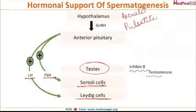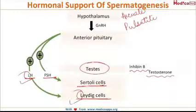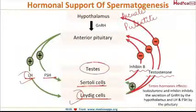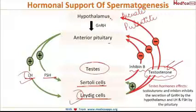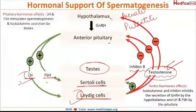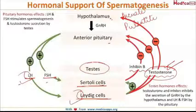FSH acts on Sertoli cells releasing inhibin B, while LH acts on Leydig cells leading to release of testosterone. A useful mnemonic: 'L and L' — LH receptors on Leydig cells, and FSH receptors on Sertoli cells. Inhibin B and testosterone exert negative feedback on the anterior pituitary and hypothalamus, inhibiting release of GnRH, LH, and FSH. Testosterone is the main hormone for spermatogenesis; LH and FSH are accessory hormones.